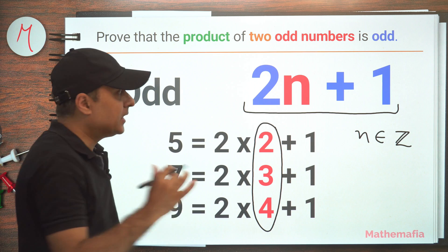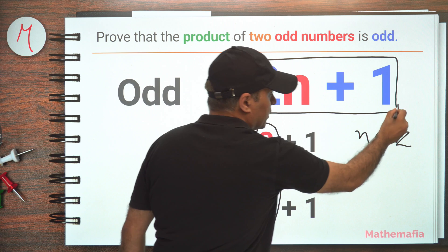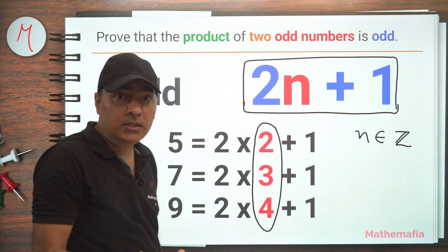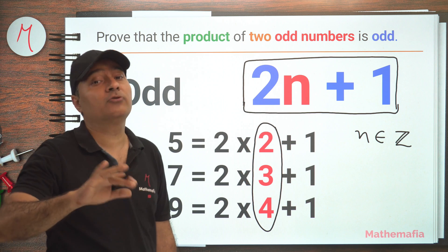Now what we have to prove is that if we multiply two such numbers, the result is also of the same form. So that's what we have to prove.